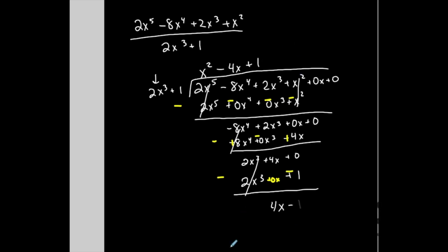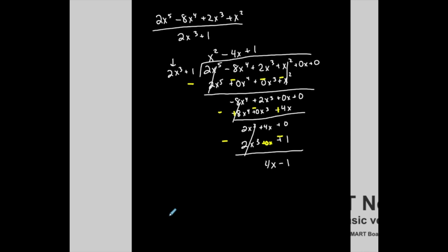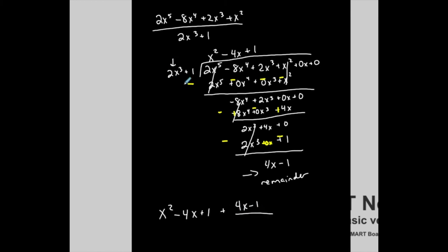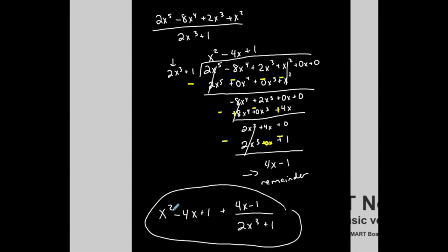Can I continue? No — the degree of the remainder is less than the degree of the divisor, so now I'm at my remainder. My answer is x² minus 4x plus 1 plus the remainder (4x minus 1) divided by (2x³ plus 1). That's the full quotient. Again, the remainder is not 0, which means 2x³ plus 1 is not a factor of this polynomial.